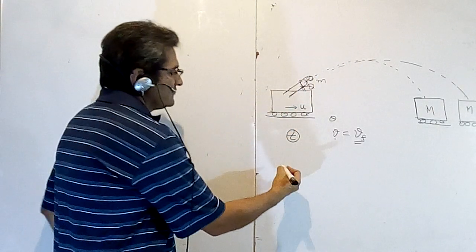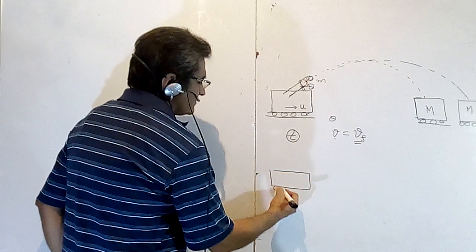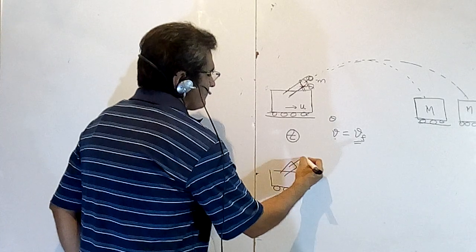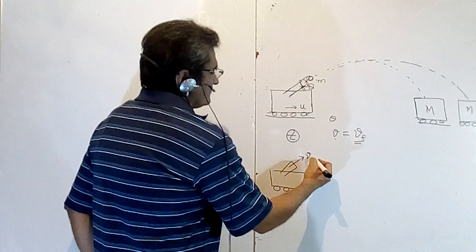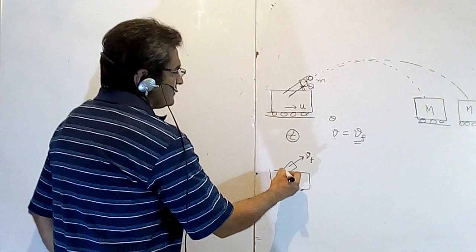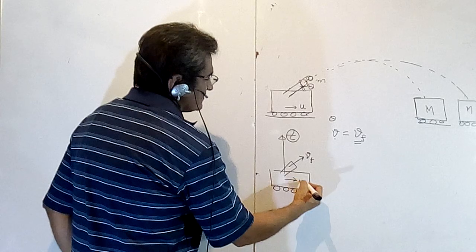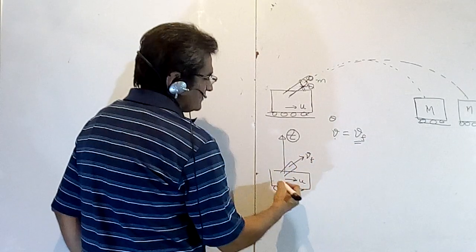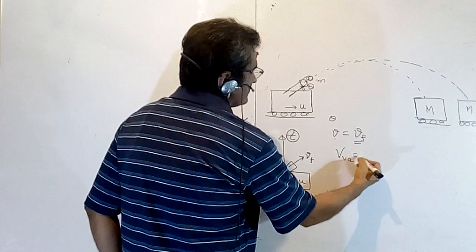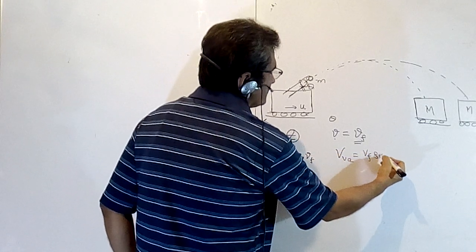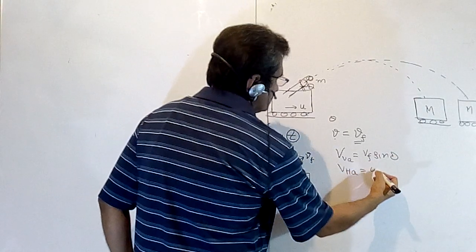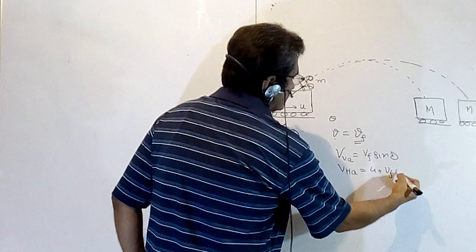As far as the vertical component is concerned, it will remain the same in absolute frame also because there is no velocity in the vertical direction. So V vertical in absolute frame will be Vf sin theta. But V horizontal in the absolute frame will be u plus Vf cos theta.